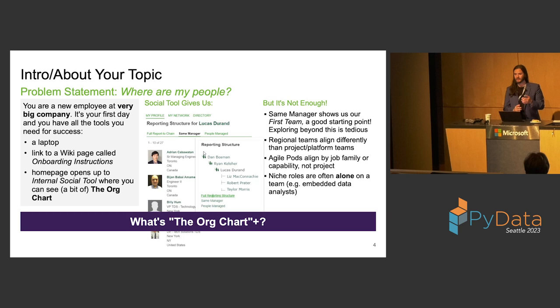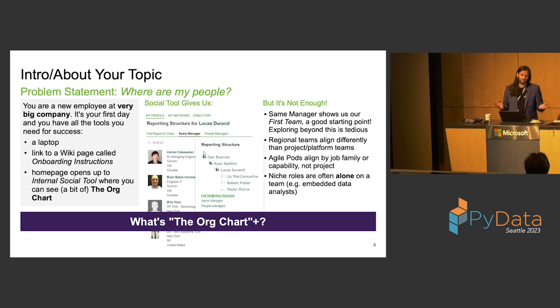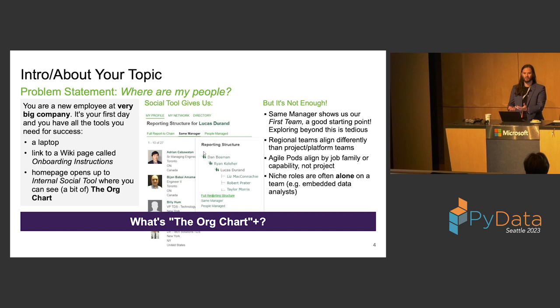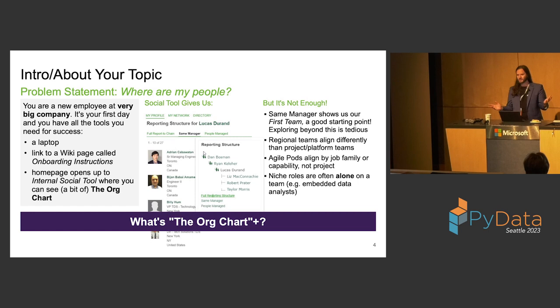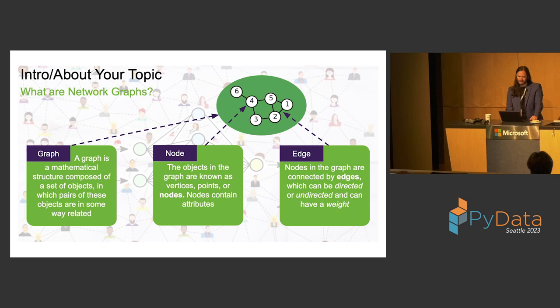A lot of organizations report based on project teams, so anyone not on your project is hard to find. Capabilities are another reporting structure — you might know other engineers but it's not clear who's worked on similar projects or has similar interests. And in the data and analytics space it's very common to have embedded data scientists who are the only data person on their team. So who else do you talk to? How do you build communities? Basically: what's the org chart plus? We want to extend the org chart by adding more attributes and finding new ways to connect people.